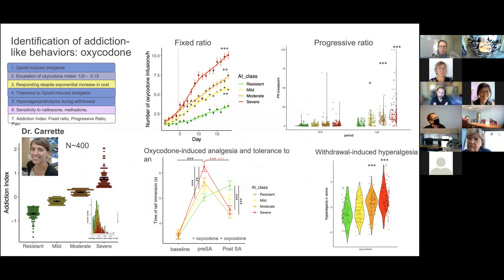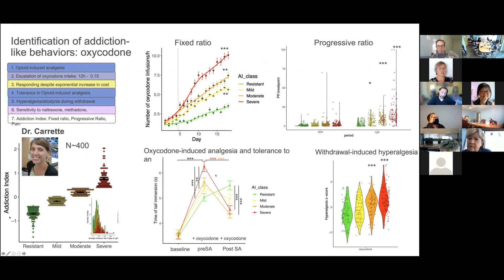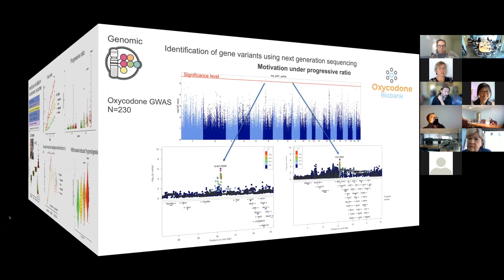For the oxycodone GWAS, we can classify animals into different subpopulations. We have measures of oxycodone-induced analgesia, tolerance to oxycodone-induced analgesia, and withdrawal-induced hyperalgesia. The animals most susceptible to withdrawal-induced hyperalgesia are also the ones that take the most opioid - a very interesting finding. Some people have claimed that pain has nothing to do with opioid use, but we tend to disagree based on this data. Most animals show tolerance to oxycodone-induced analgesia, but animals that are resistant show a sensitization of opioid-induced analgesia.